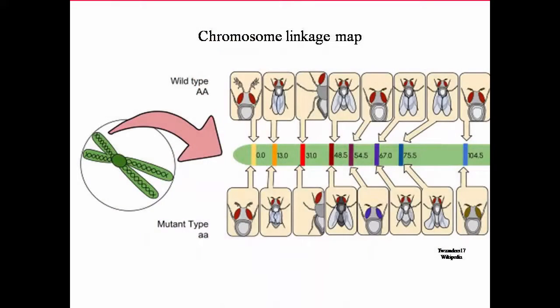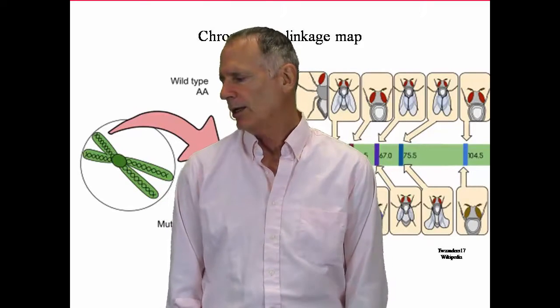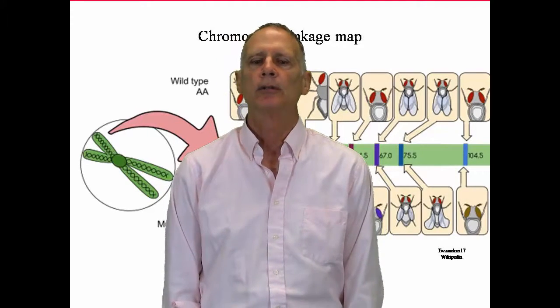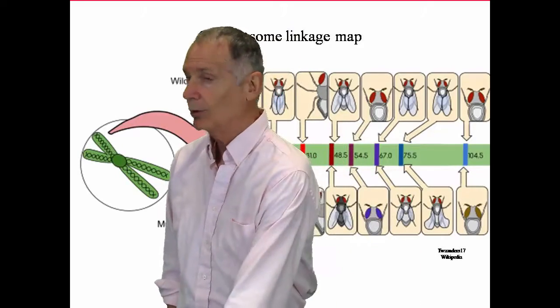And this is a map. They worked further and they could link all of these different characteristics, not only to a chromosome, but they could tell where each characteristic was relative to the other traits. How cool is that?